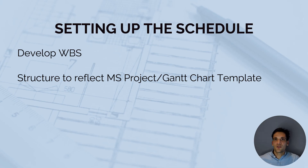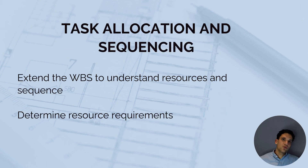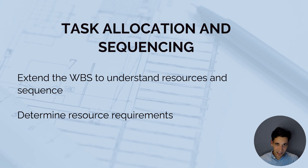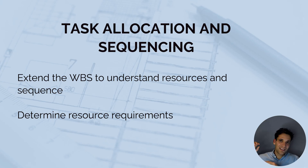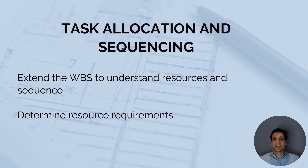If you're using Microsoft Project or a specific Gantt chart template, you want to make sure the data that ChatGPT gives you reflects that structure. Once you've set up the work breakdown structure, you can then use ChatGPT to extend on this to allocate and sequence tasks — to understand the resourcing, the sequence of the different activities, and to determine the resource requirements. So you use ChatGPT to set up your initial list of tasks, then get it to sequence them and tell you what resources you need.